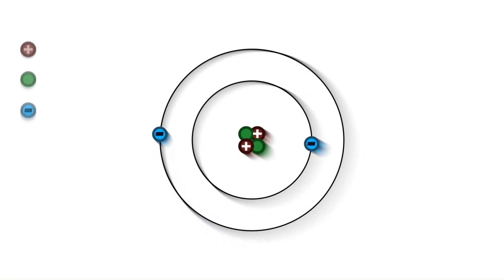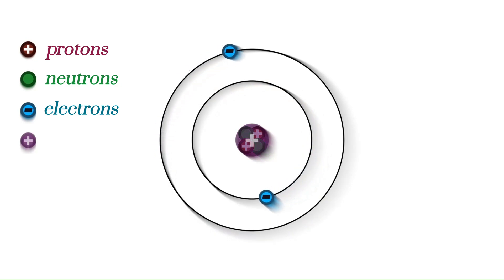Atoms are made up of three tiny particles: protons, neutrons, and electrons. The protons and neutrons live in the nucleus at the center, while the electrons orbit the nucleus in specific paths or energy levels.